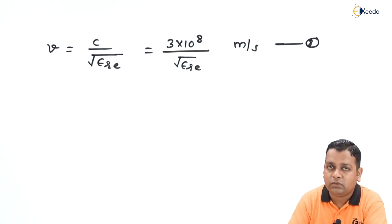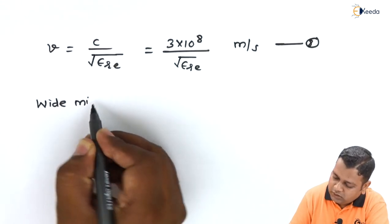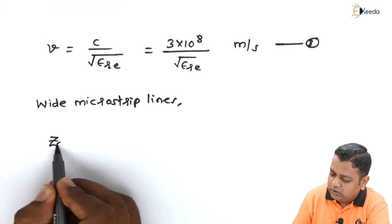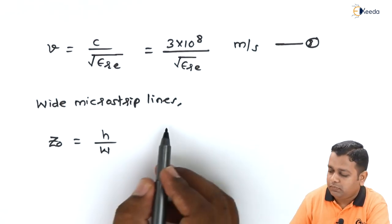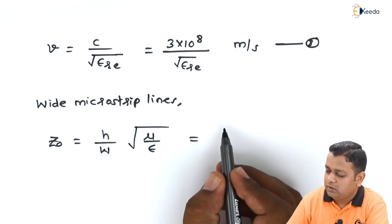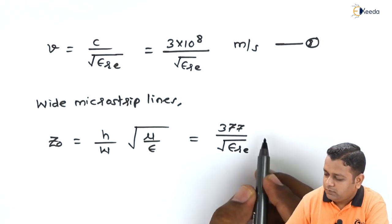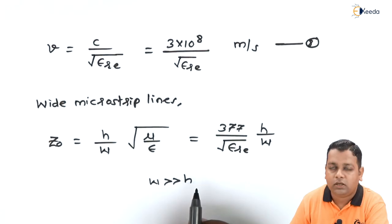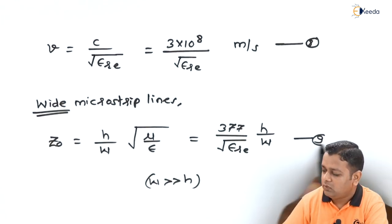For the wide type of microstrip lines, the characteristic impedance equation is modified to the form: Z0 equals h divided by w, multiplied by the square root of mu divided by epsilon, which can also be written as 377 divided by the square root of epsilon r-e, all divided by h/w. This applies provided w is much greater than h, in which case the microstrip line is considered a wide microstrip line. This is equation number 9.